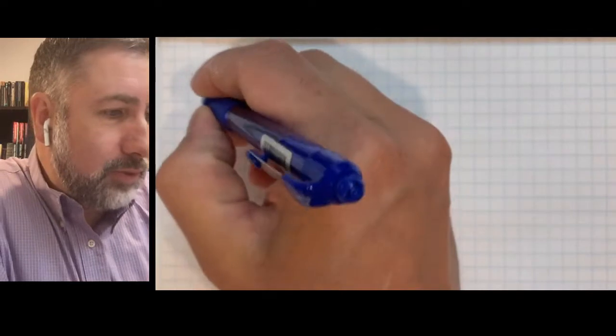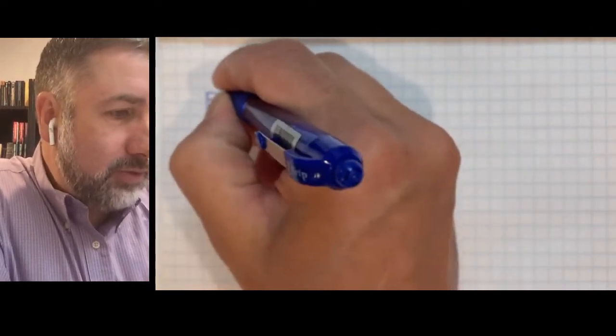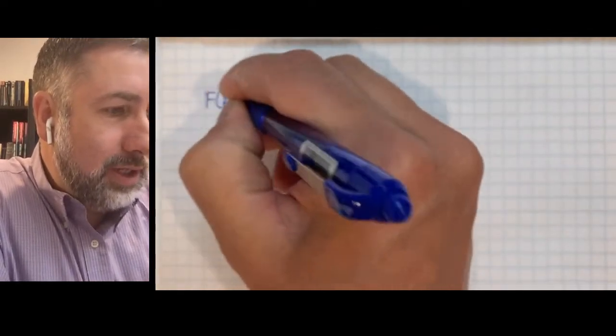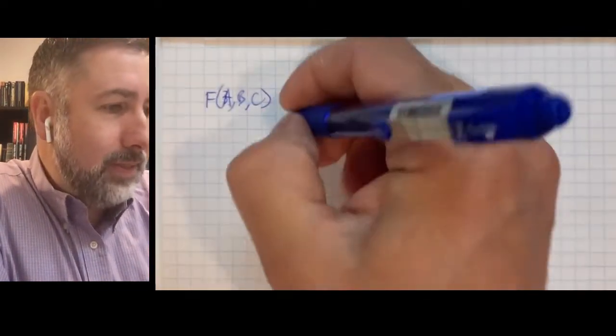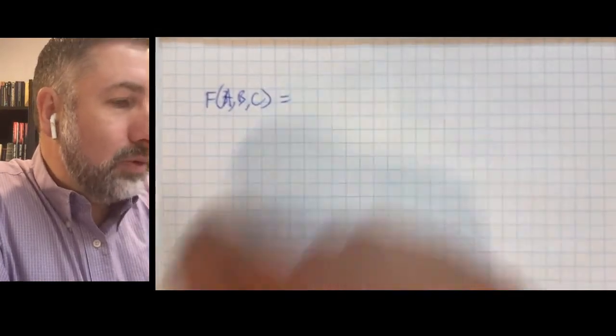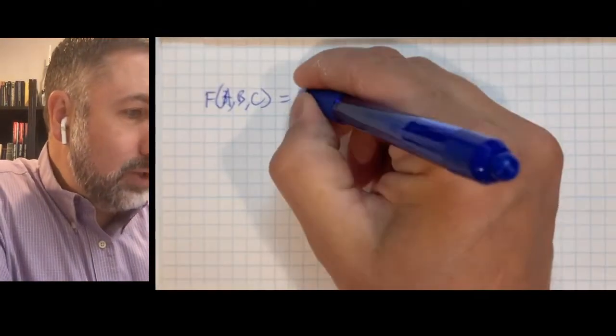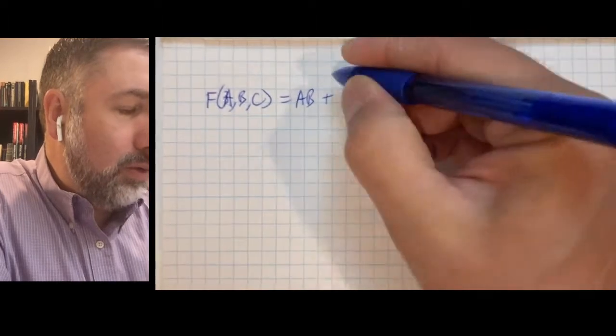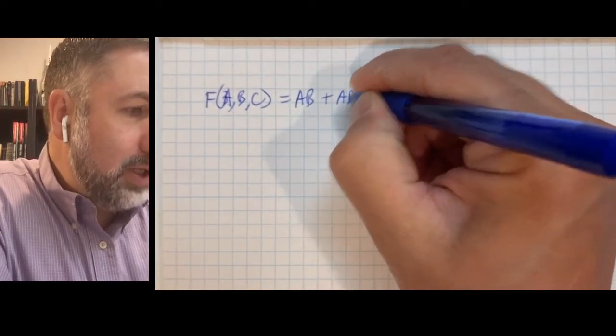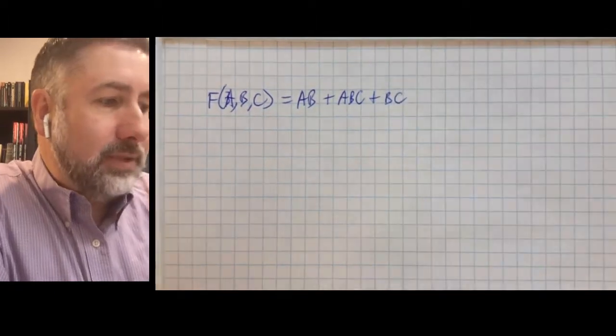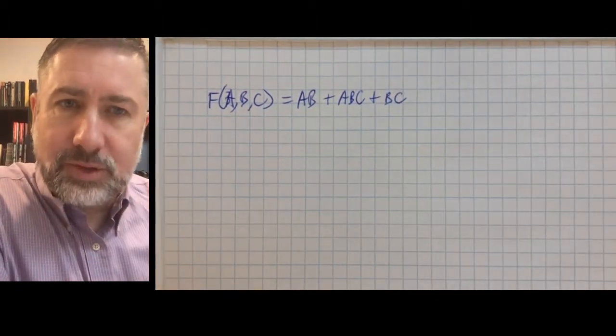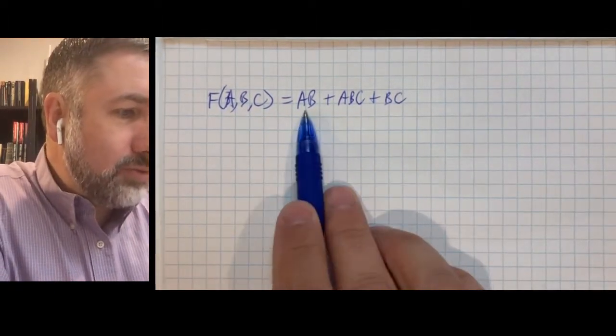Let's start with a simple, fairly straightforward example, a function of three variables A, B, and C. F(A,B,C) is going to be equal to AB or ABC or BC. Three variables, three product terms.